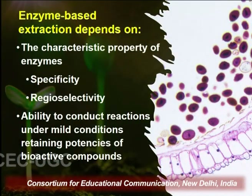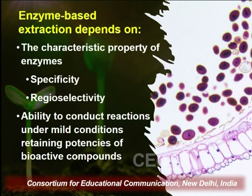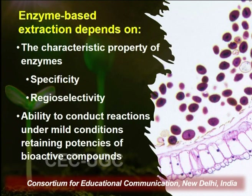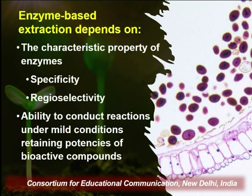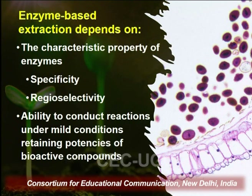In order to get maximum benefit, we have to select an enzyme after studying the cell wall characteristics of the sample. Enzymes are also regioselective, and this regional selectivity depends upon their specificity. If an enzyme is a cellulase, it will act on cellulosic components only; if a region lacks cellulosic components, such an enzyme will not act on that region.